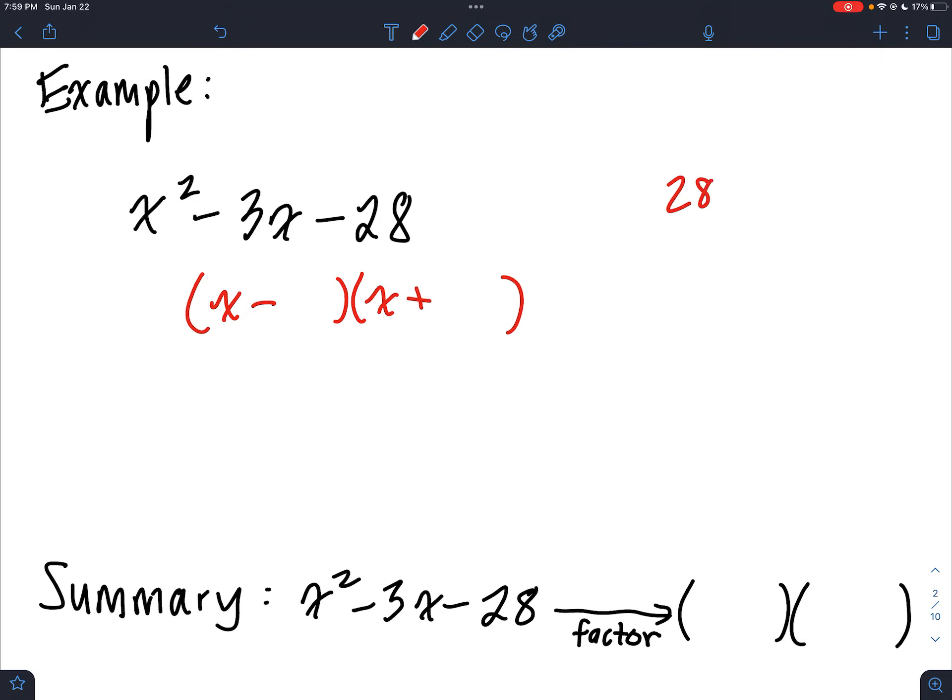So a quick example just to kind of show you how it works without going into all of the strategy all at once. The factoring begins by looking at the last term. In this case, it's 28. And you write down all the numbers, the pairs of numbers that can multiply to 28. And that's kind of your word bank. And you use those to help figure out what the factored form is going to be. And this is what you're guided by, is this minus 3. In this case, these numbers are 3 apart.